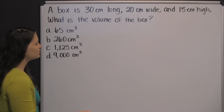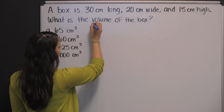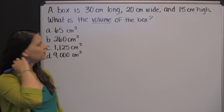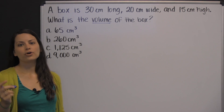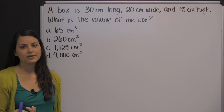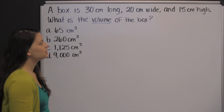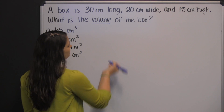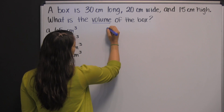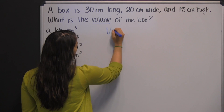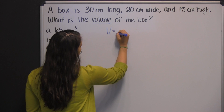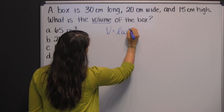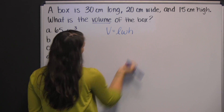On these types of problems, you're going to have to know the formula for volume, and in this case it's volume of a rectangular prism. The formula is that the volume is the length times the width times the height.